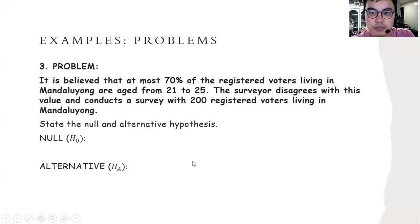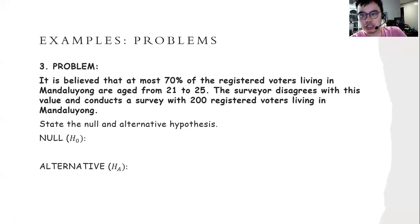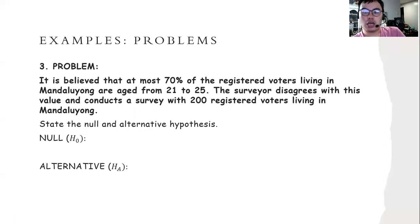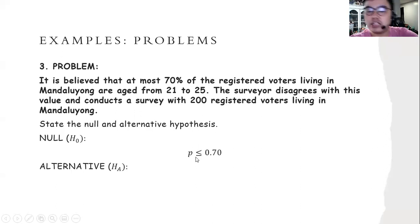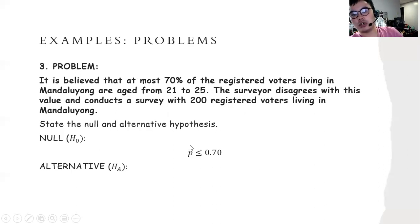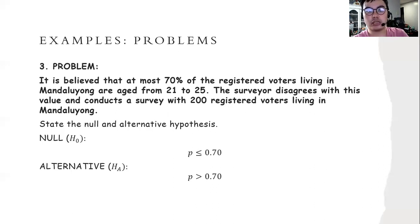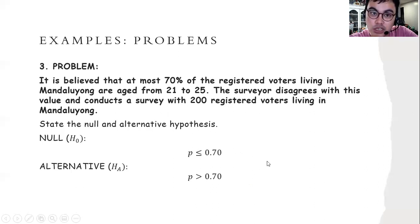In problem three, it is believed that at most 70% of the registered voters living in Mandaluya are aged from 21 to 25. The surveyor disagrees with this value and conducts a survey with 200 registered voters. The null hypothesis states that P is less than or equal to 0.70, meaning 0.70 is the greatest value but it can equal this percentage. The alternative hypothesis states that P is greater than 0.70. Keep in mind that the null and alternative hypotheses are exactly opposites. This is a directional hypothesis, and we use the one-tailed test for it.